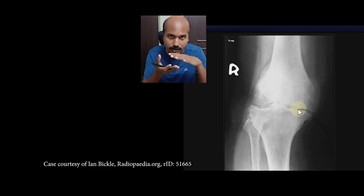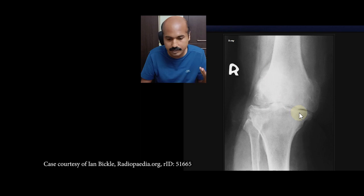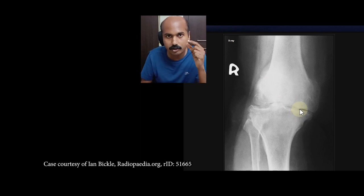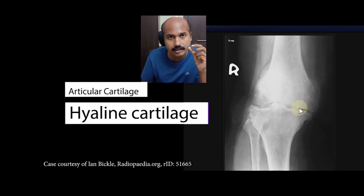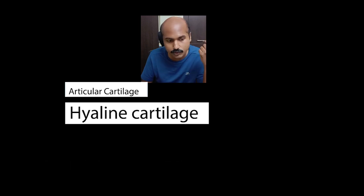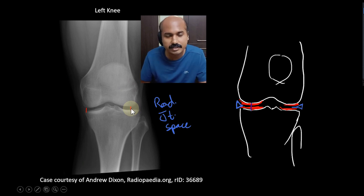When you see that the joint space is lost, it means that much cartilage is lost — classically seen in osteoarthritis. This is a mild case of osteoarthritis and this is a severe case, where you have significant loss of the radiological joint space due to loss of articular cartilage. Articular cartilage is a hyaline variety of cartilage, and since it is radiolucent, you see it as a space — that space is actually filled with cartilage.